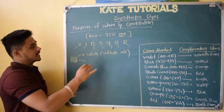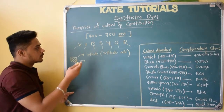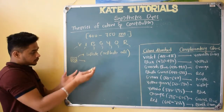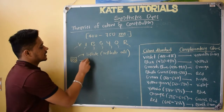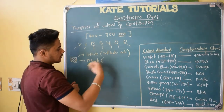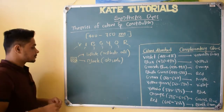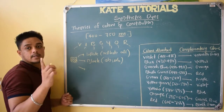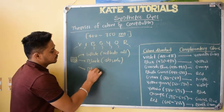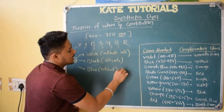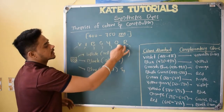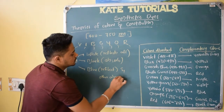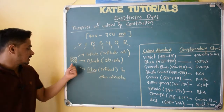If it absorbs all the radiation — these radiations, which I can call wavelength, radiation, or color because these are visible radiations — if the same substance absorbs all the radiation, it appears black. Now, if it absorbs everything except one — say it reflects blue and absorbs all other things: violet, indigo, green, yellow, orange, red — then that substance appears blue to me.